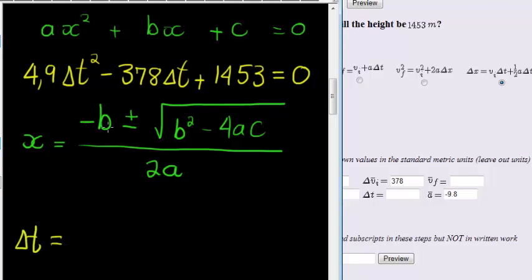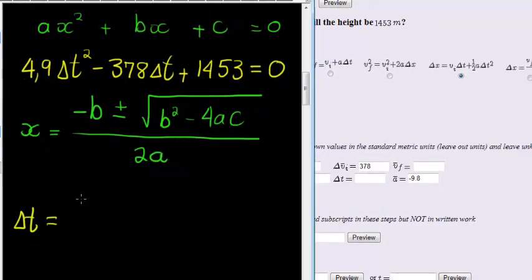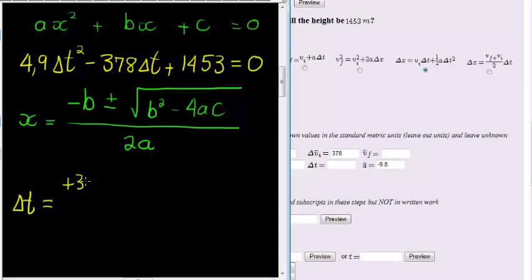Now with that expression, I have delta t instead. And my delta t, for b I have negative 378 and that will therefore be negative. Negative that would be positive 378 plus minus, that's why there's going to be two answers. One is going to have a plus and one is going to have a minus.